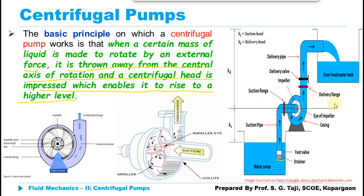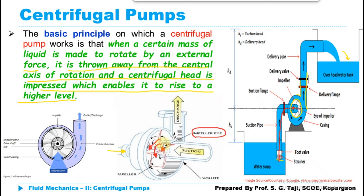In the arrangement of a centrifugal pump, the suction pipe is inserted into the sump and connected to the casing. Inside the casing, the impeller is coupled on the shaft. When the electric motor transmits mechanical energy through the shaft to the impeller, the impeller rotates, developing a suction head at its center — known as the eye of the impeller. Due to this suction head, water is drawn from the sump towards the eye of the impeller, and as the fluid contacts the rotating impeller, it also starts to rotate, generating centrifugal force.